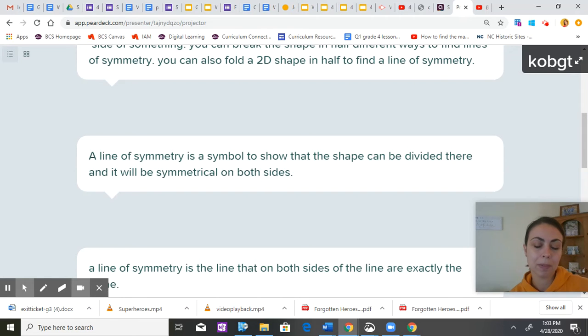So let me know if you think why you think a line of symmetry is a symbol, because currently I'm not convinced that it's a symbol. It's a type of line.